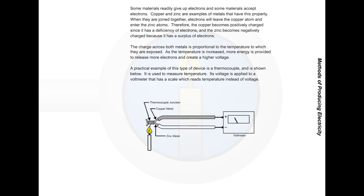As the temperature is increased, more energy is provided to release more electrons and create a higher voltage. A practical example of this type of device is the thermocouple. It is used to measure temperature. Its voltage is applied to a voltmeter that has a scale which reads temperature instead of voltage.